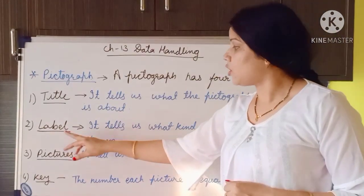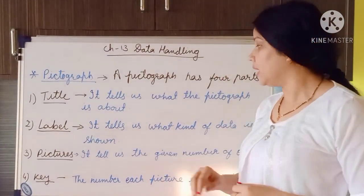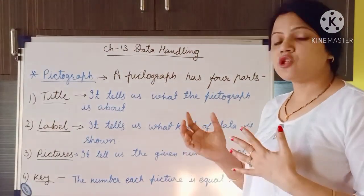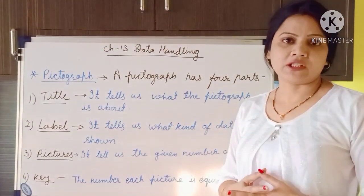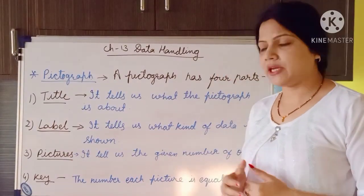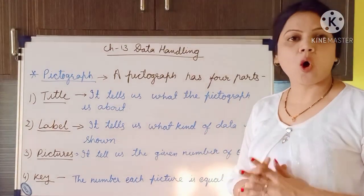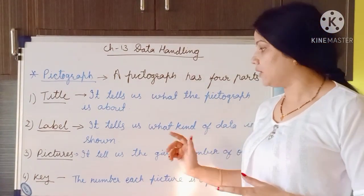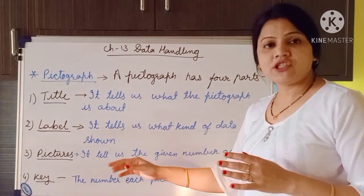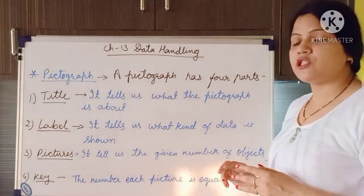The second part of the Pictograph is Label. The label tells us what kind of data the Pictograph is representing. The third one is Pictures — it tells us the given number of objects. And the fourth one is Key — it tells us the number each picture is equal to.